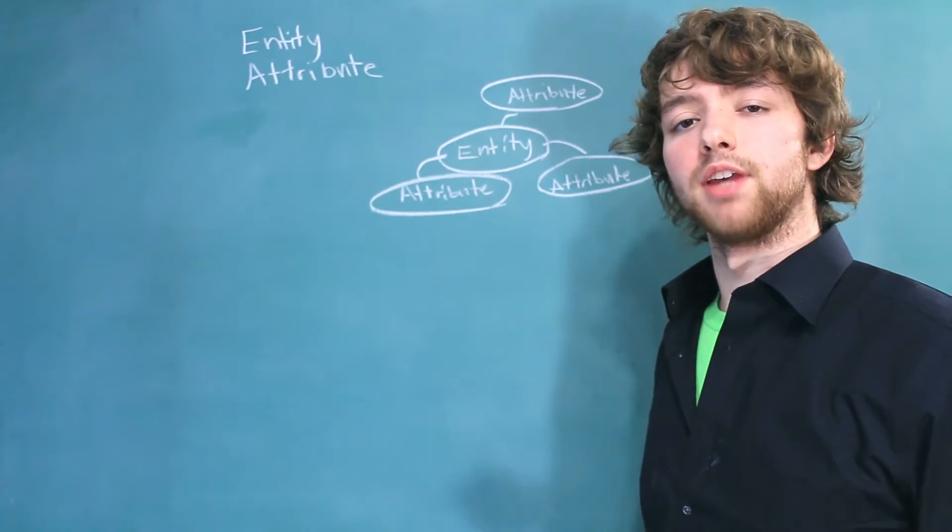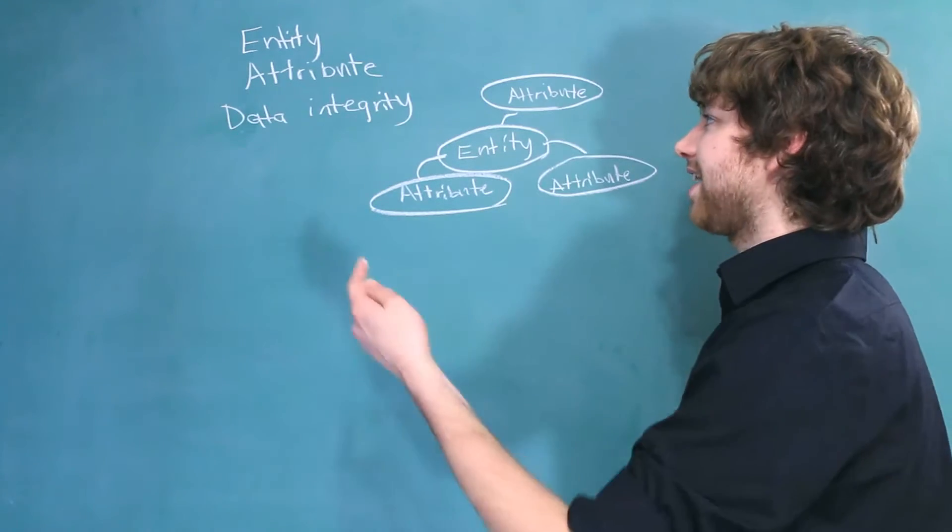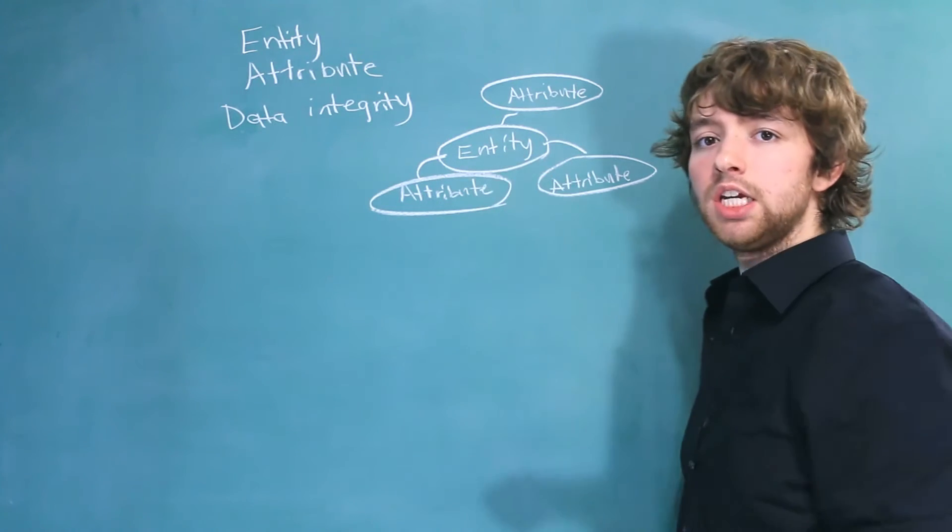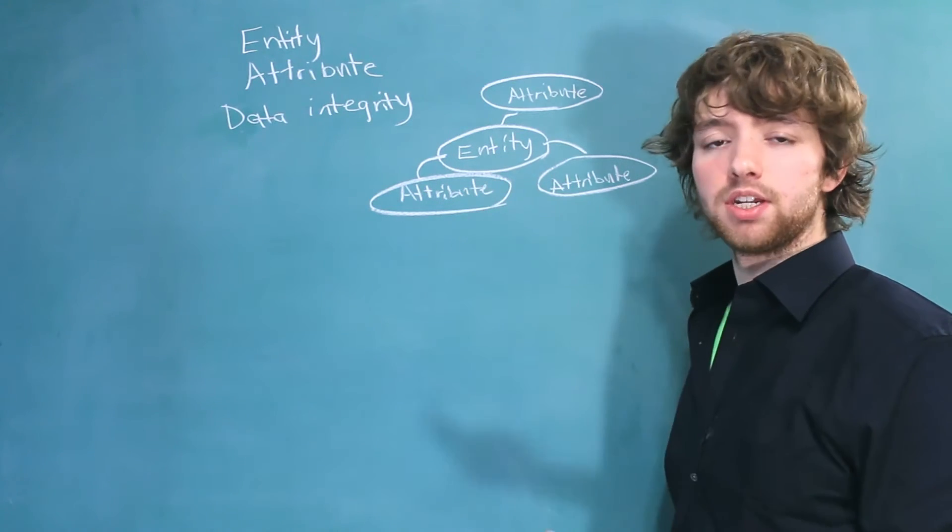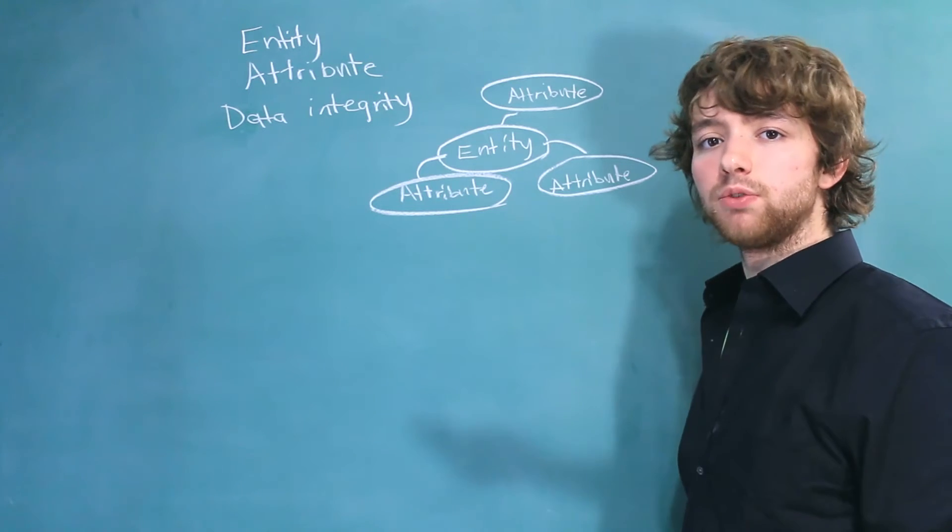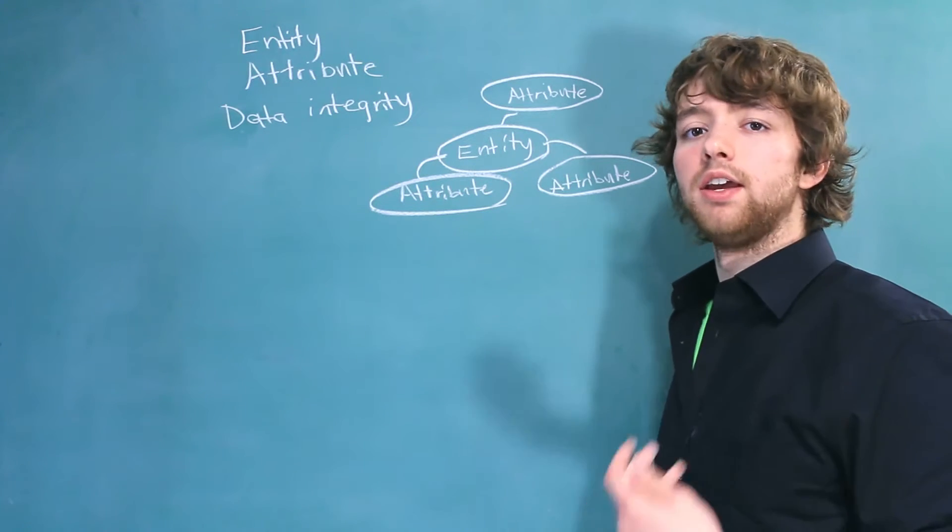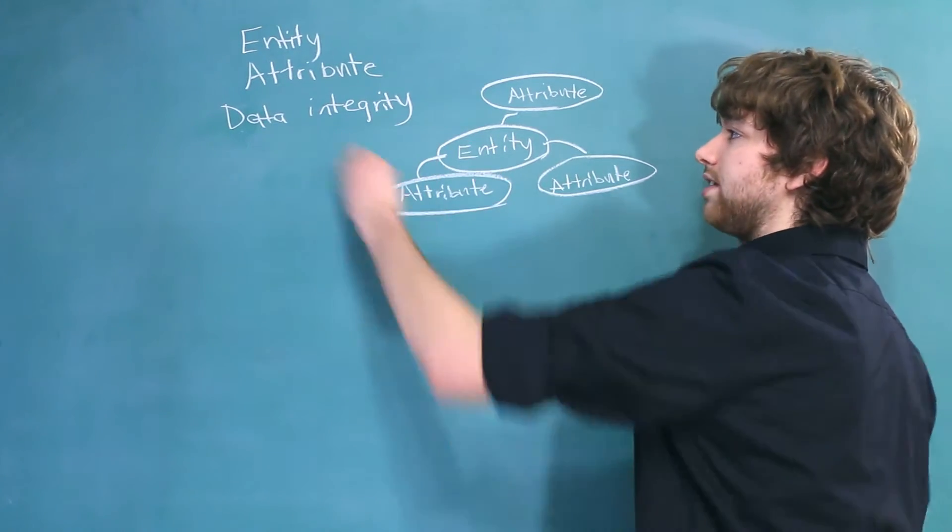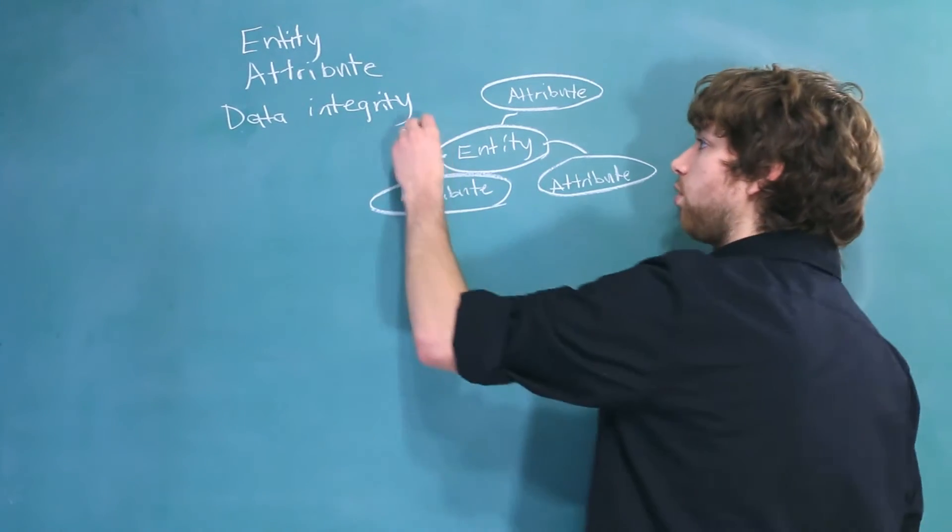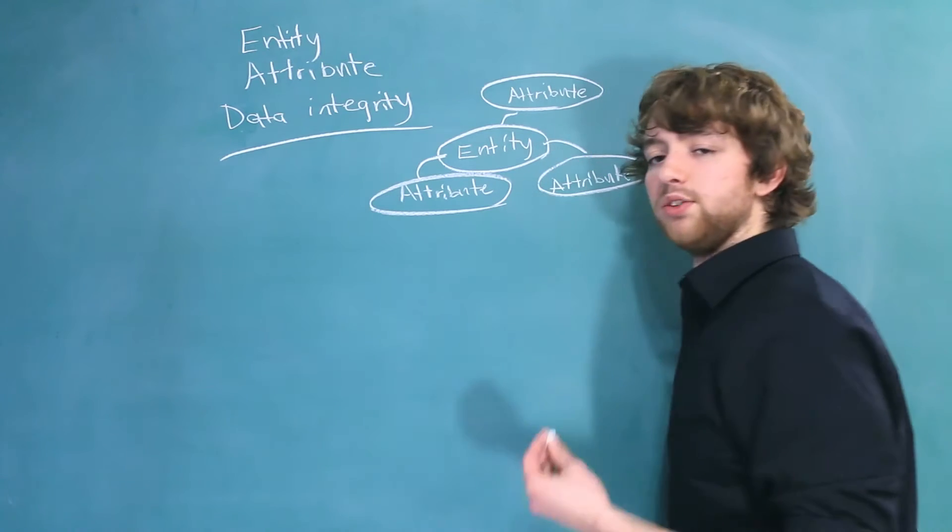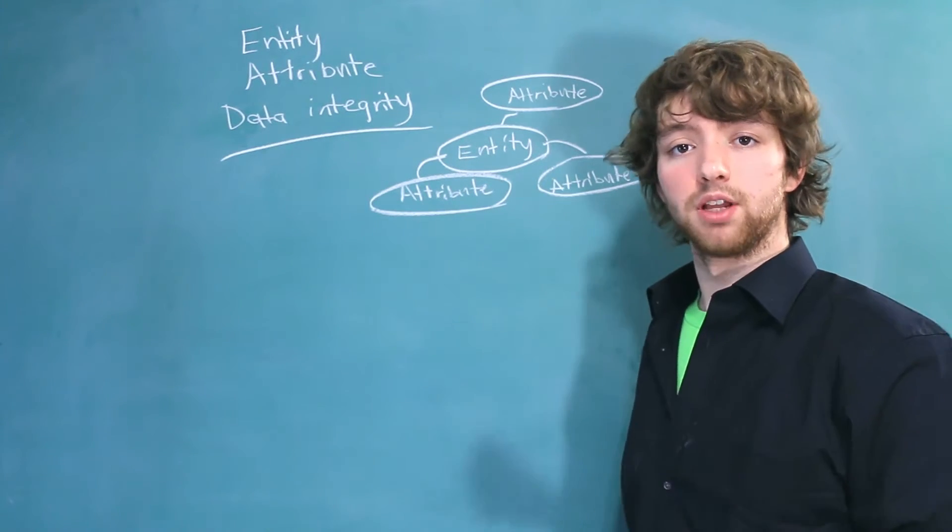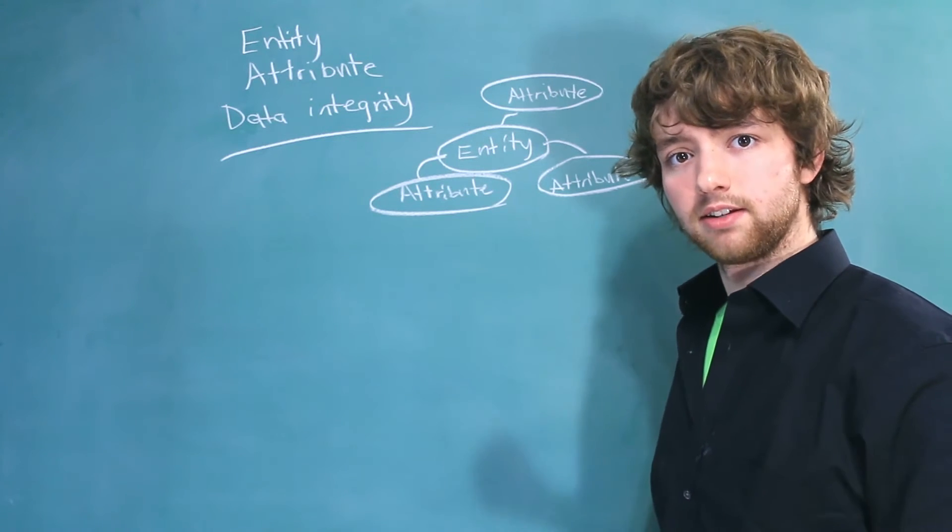Now I'm going to continually bring up the concept of data integrity. Data integrity means that the attributes we are storing about the entity are accurate, as up-to-date as possible, not redundant, meaning duplicates, and there's no conflicting information. There is a lot of stuff we do inside of a database to enforce data integrity. It's one of the most important things to have when it comes to database development and database design.